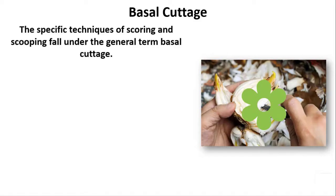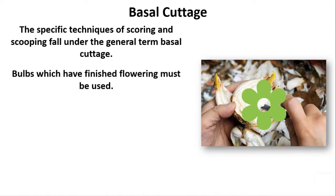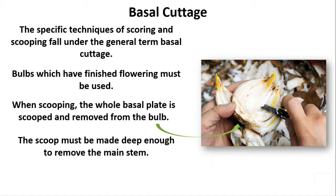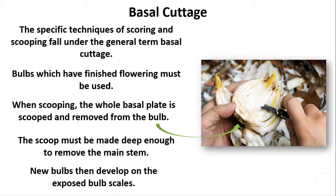Basal cutage. The specific techniques of scoring and scooping fall under the general term basal cutage. Bulbs which have finished flowering must be used. When scooping, the whole basal plate is scooped and removed from the bulb. The scoop must be made deep enough to remove the main stem. New bulbs then develop on the exposed bulb scales.